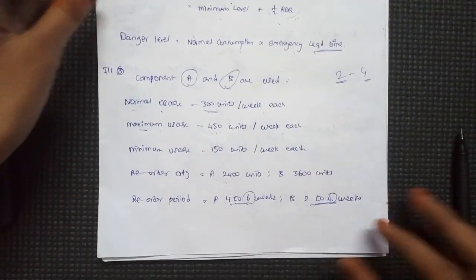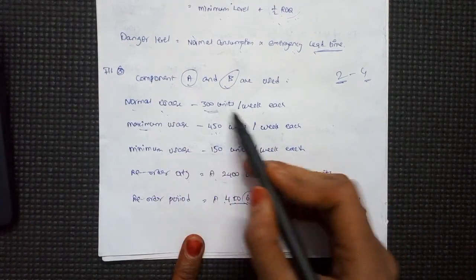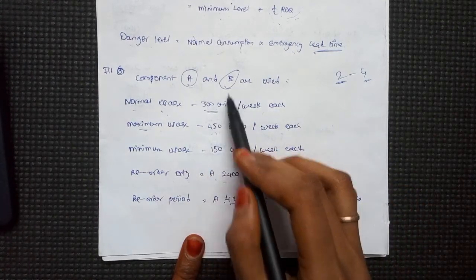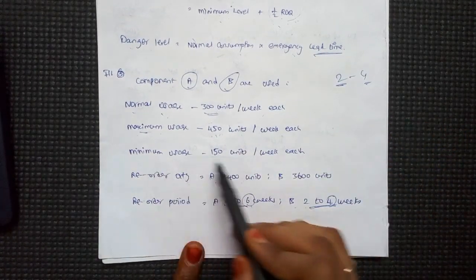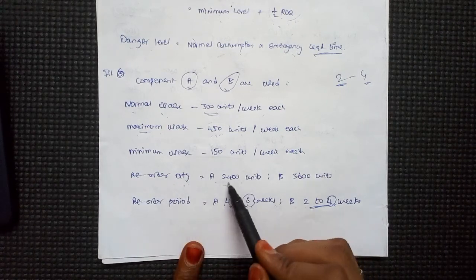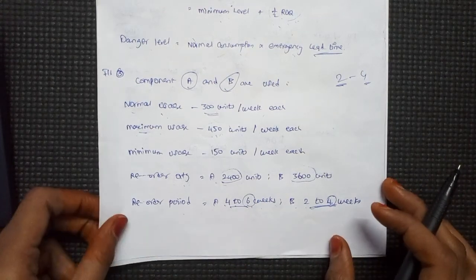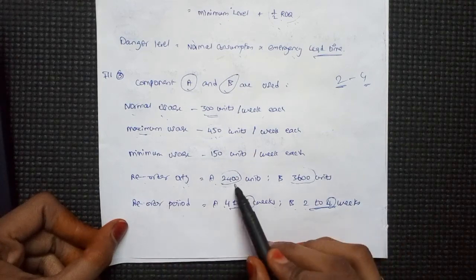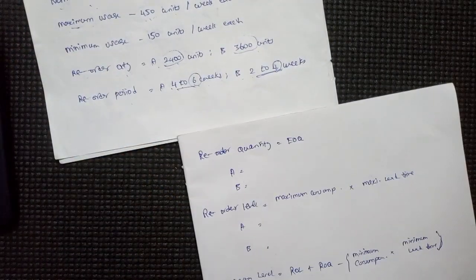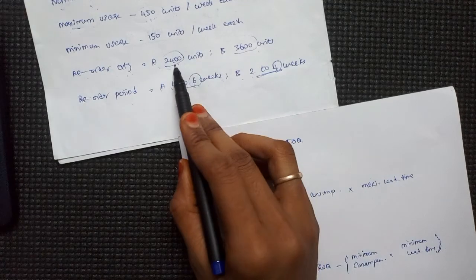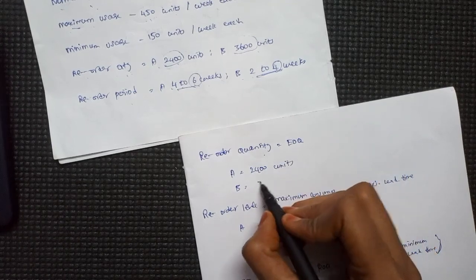Let's use different components — component A and component B — with these figures: normal consumption is 300 units per week each for A and B. Maximum usage is 450 units per week each. Minimum usage is 150 units per week each. Reorder quantity: A is 2,400 units, B is 3,600 units. Lead time: A is 4 to 6 weeks, B is 2 to 4 weeks. EOQ: A is 2,400 units and B is 3,600 units.